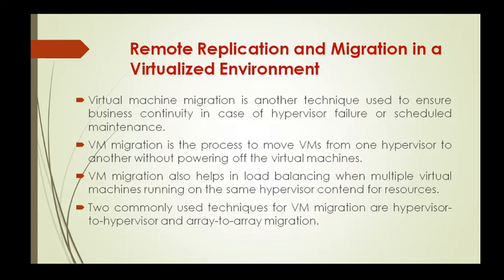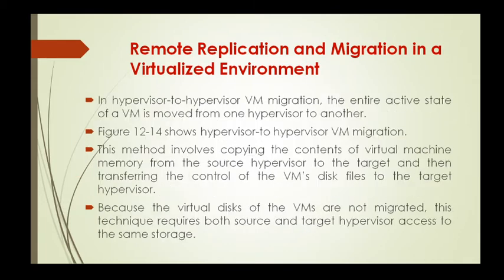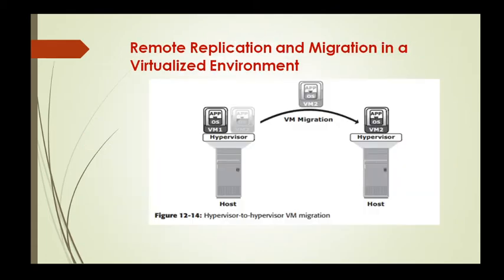In hypervisor-to-hypervisor virtual machine migration, the entire active state of the virtual machine is moved from one hypervisor to another. You can see this in the figure, which shows hypervisor-to-hypervisor virtual machine migration. This method involves copying the contents of the virtual machine memory from the source hypervisor to the target, and then transferring the control of the virtual machine's disk files to the target hypervisor.